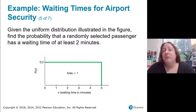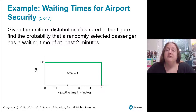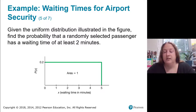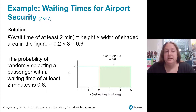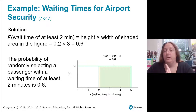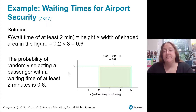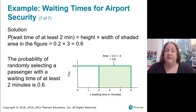Now using this uniform distribution, we want to find the probability that a randomly selected passenger has a waiting time of at least two minutes. We draw a vertical line at two — at least two minutes means two minutes or more, so we look between two and five minutes. We take the area of that rectangle: 0.2 times three gives an area of 0.6. That means the probability that a randomly selected passenger has a waiting time of at least two minutes is 0.6.